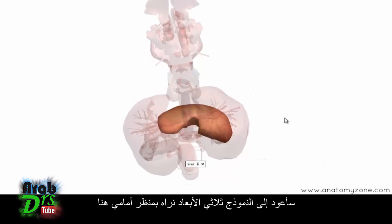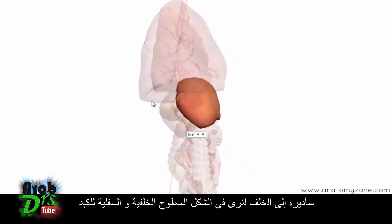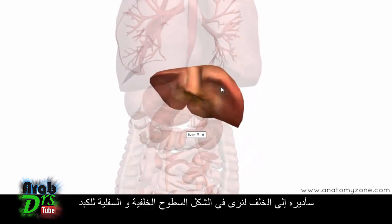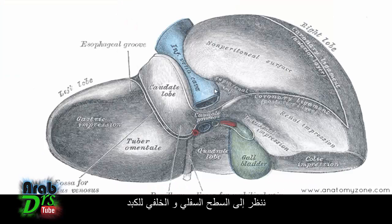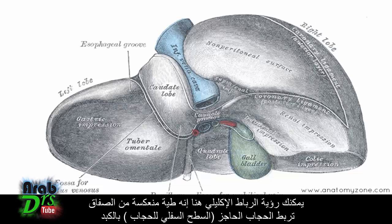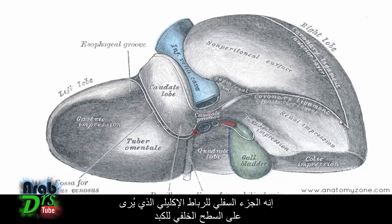Coming back to the 3D model — we're looking at an anterior view here. We're going to rotate it around to the back and look at a diagram of the posterior and inferior surfaces of the liver. Looking at the inferior and posterior surface, you can see the coronary ligament here — a reflection of peritoneum which attaches the inferior surface of the diaphragm to the liver. You can see the lower part of the coronary ligament running along the posterior surface.